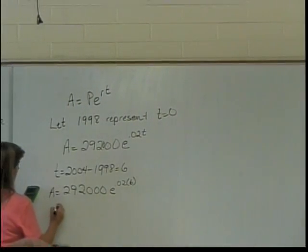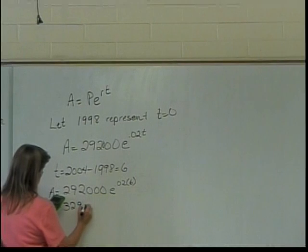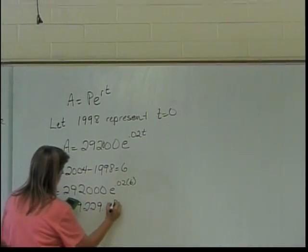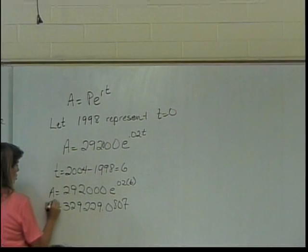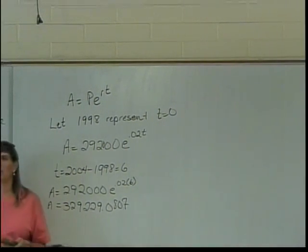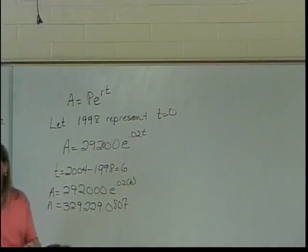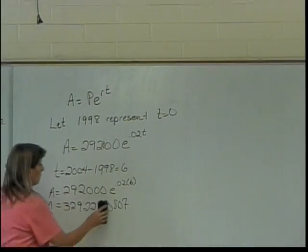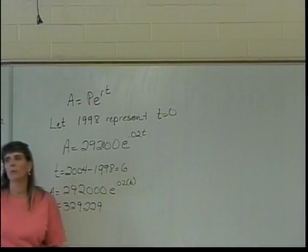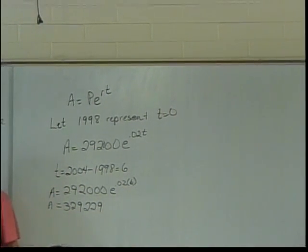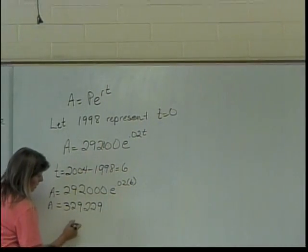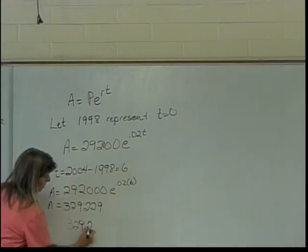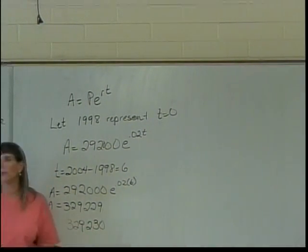This gives me 329,229.0807. Is that an acceptable answer? No, because you can't have parts of people — well, you can, but they're not going to be very happy people. So what do I do with that? I can just erase it, or if it's close enough to being a person, you can round up. So either 329,229 or 329,230 people would be acceptable.